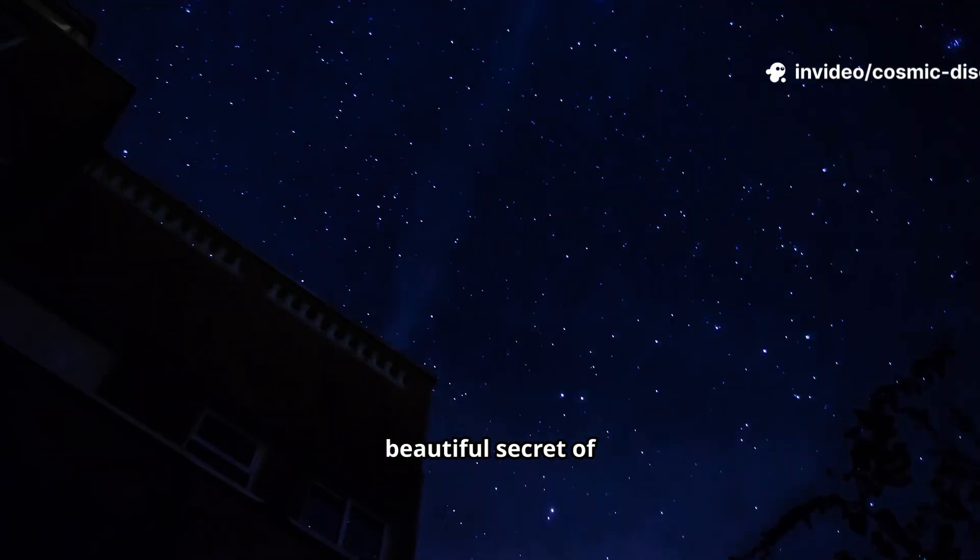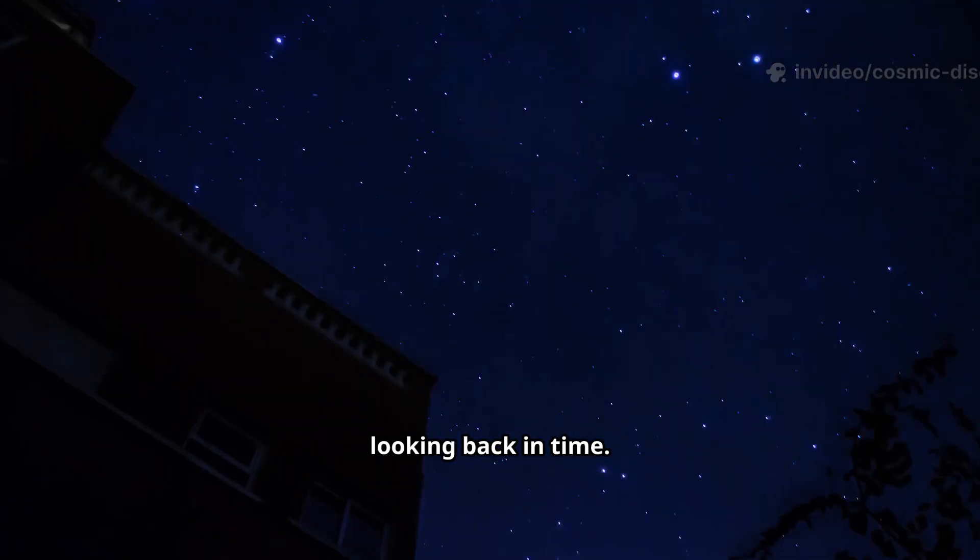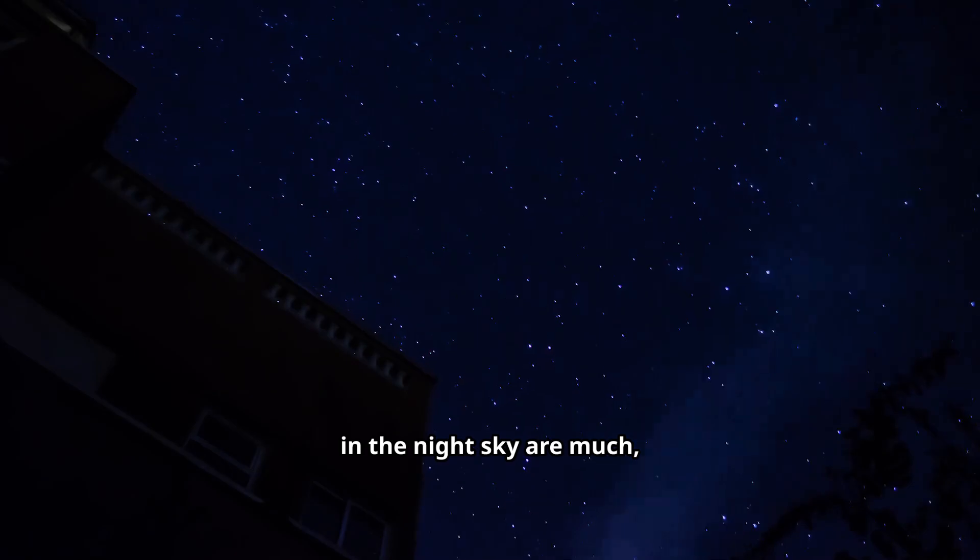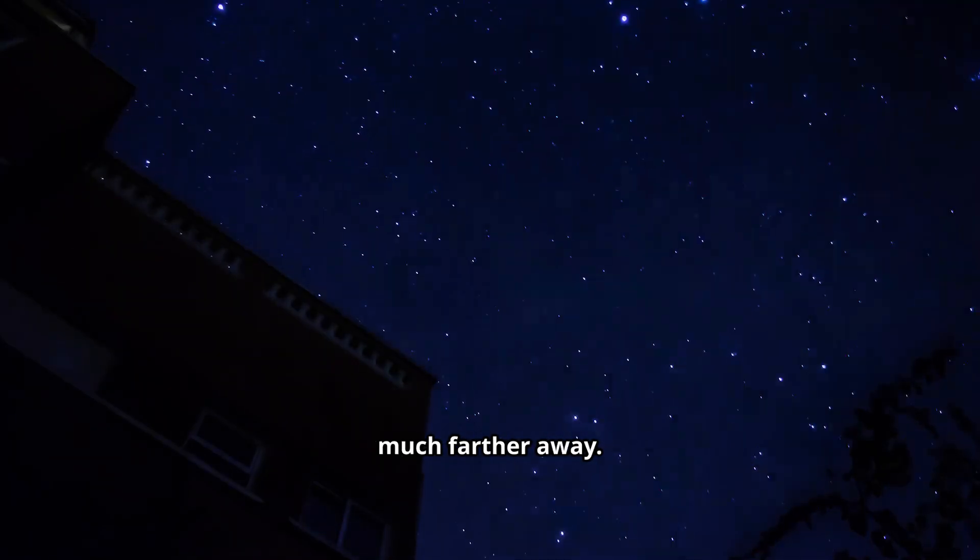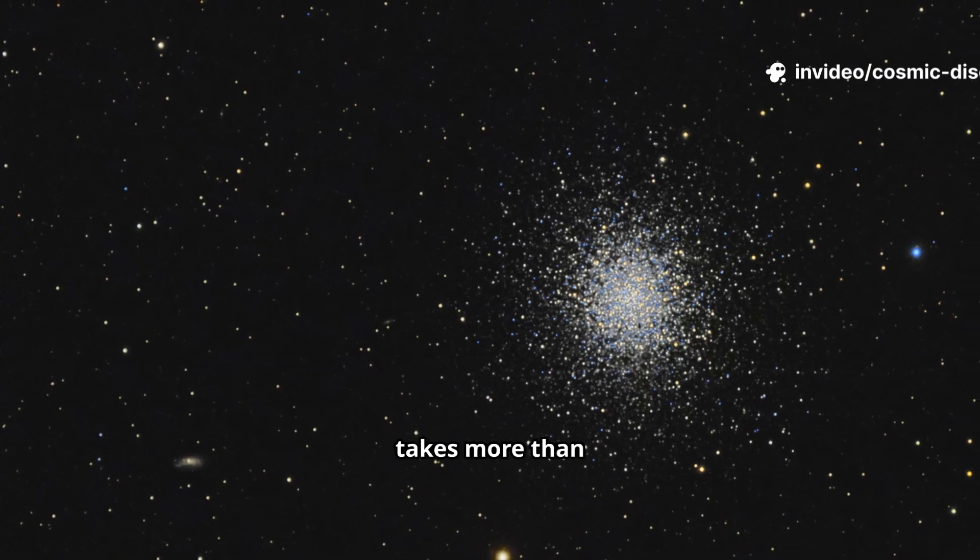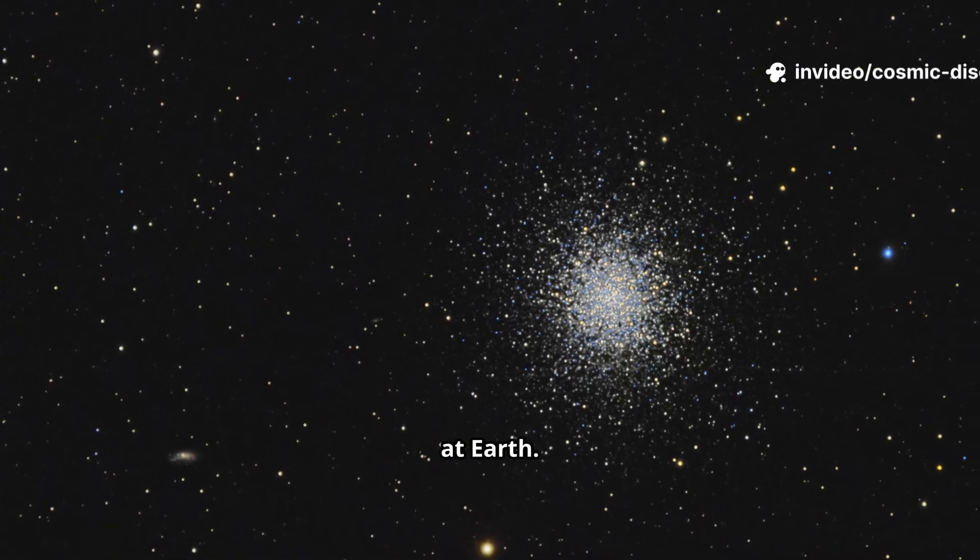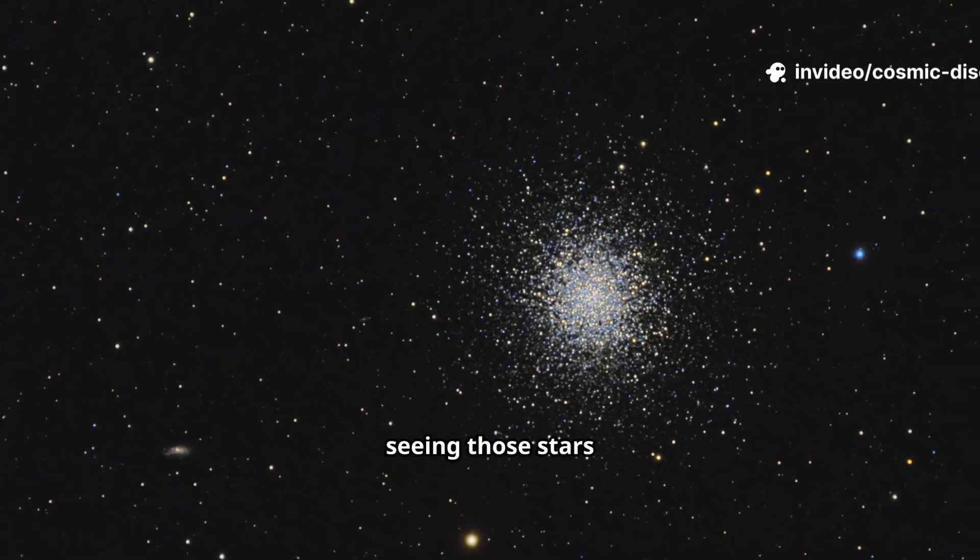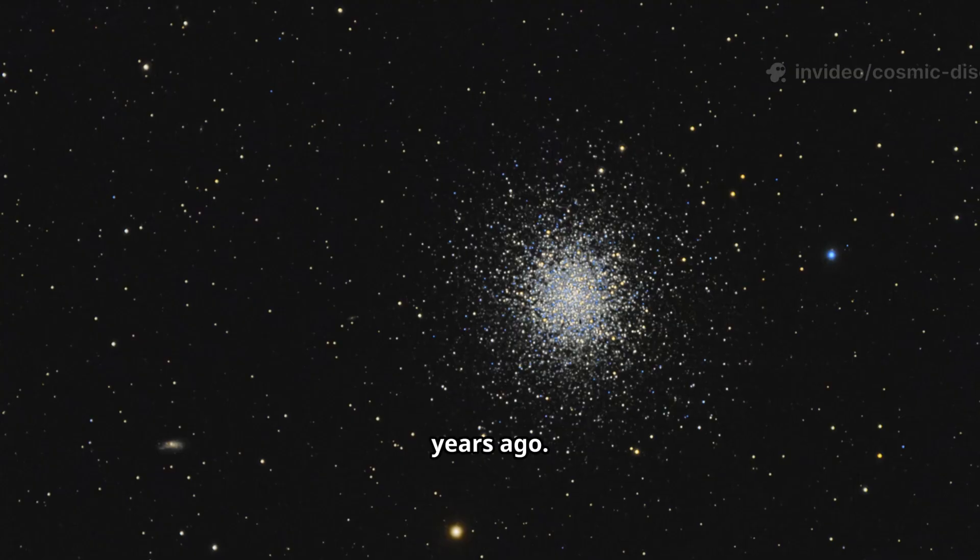This is the simple, beautiful secret of looking back in time. The stars you see in the night sky are much, much farther away. The light from the nearest star system, Alpha Centauri, takes more than four years to arrive at Earth. This means we are seeing those stars as they were four years ago.